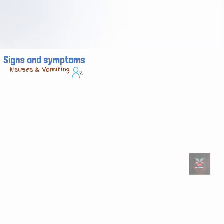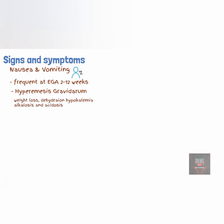Nausea and vomiting, also called morning sickness, is another symptom of pregnancy. Nausea and vomiting occurs in approximately 70–85% of all pregnancies, most notably at 2–12 weeks gestation. It frequently occurs in the morning, but it can occur throughout the day. Hyperemesis gravidarum is persistent vomiting that typically occurs early in pregnancy. When severe, this can result in weight loss, dehydration, and electrolyte imbalances such as hypokalemia, alkalosis, and acidosis.